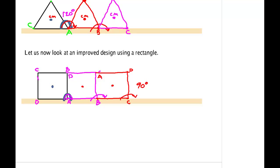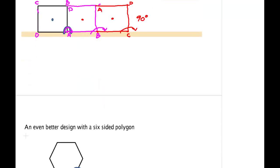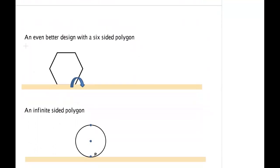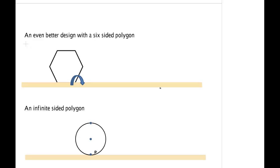And we could continue this. We could make it even better. We could use a six-sided polygon. And in here, of course, we'd have A, B, C, D, E, and F. And this side would come over.